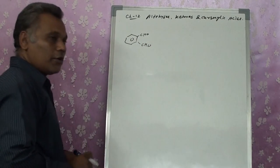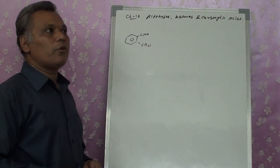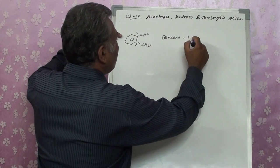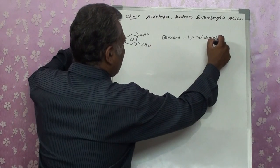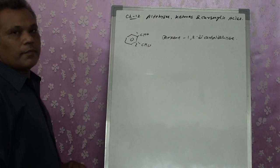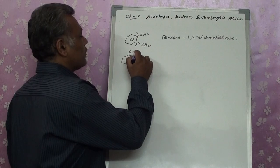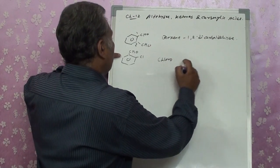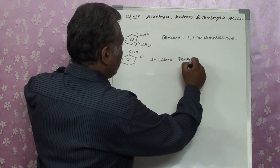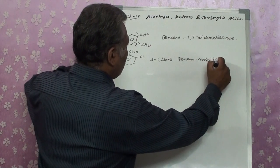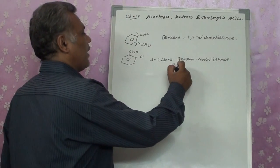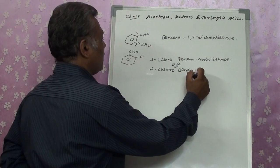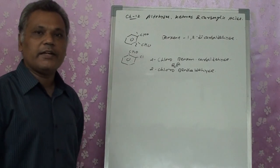For benzene with two CHO groups, both cannot be included in the chain, so the compound is named benzene-1,2-dicarbaldehyde. For a benzene ring with CHO and a Cl substituent, chloro is a prefix at position 2, giving 2-chlorobenzene carbaldehyde, or the accepted name 2-chlorobenzaldehyde — both are correct since benzaldehyde is an accepted IUPAC name.